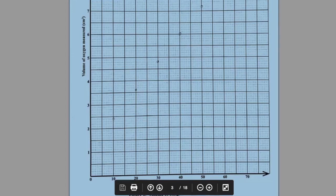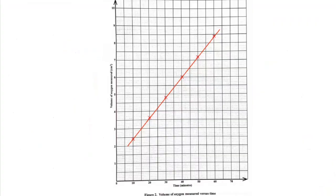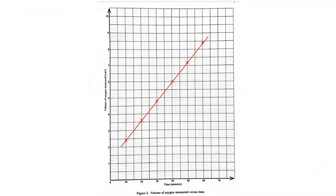The plot shows a nice linear relationship — as time increases, we get an increase in the volume of oxygen produced. We draw a line of best fit; it doesn't always have to capture all the points, but in this case it does. We get a straight line drawn with our ruler.